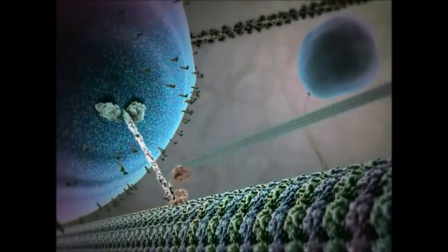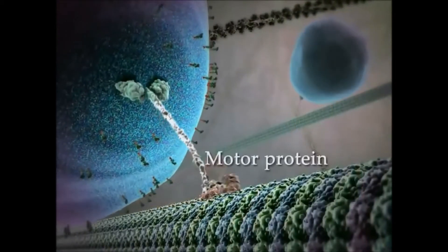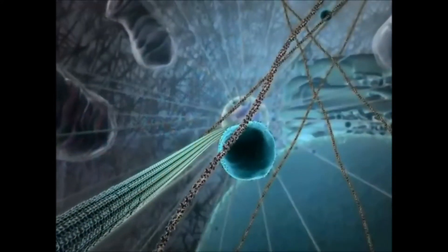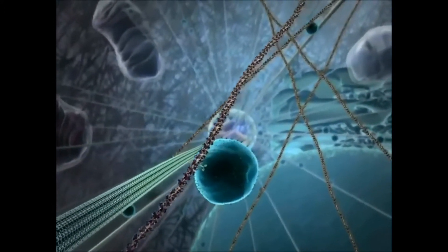It uses microtubules, which form the cytoskeleton of both the cell body and the axon as train tracks. Simultaneously, a motor protein such as kinesin powers the movement of materials similar to that of a train.